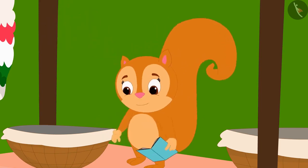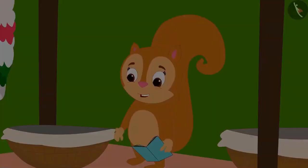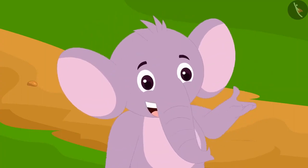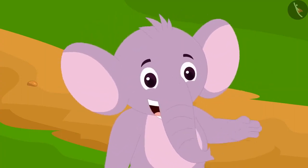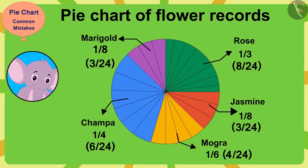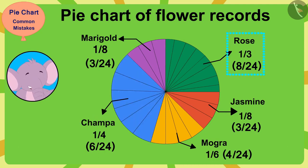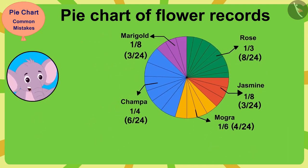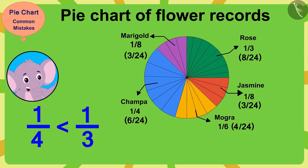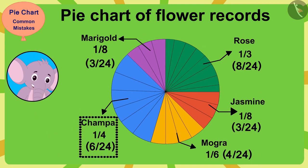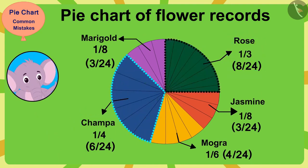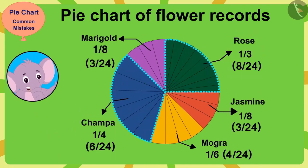I have also learned to make pie charts. Oh wow, Chanda, you have made a very beautiful pie chart. But what's this? Champa flowers have been used in one-fourth of orders, and rose flowers in one-third of orders. One-fourth is smaller than one-third. But in your pie chart, the one-fourth part of Champa flowers appears larger than the one-third part of rose flowers. How can this be possible?